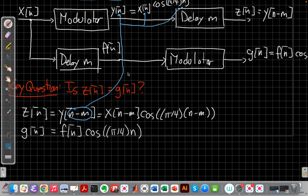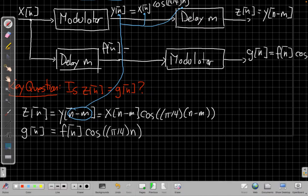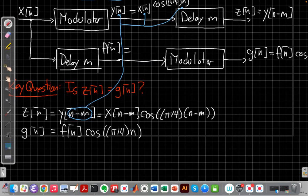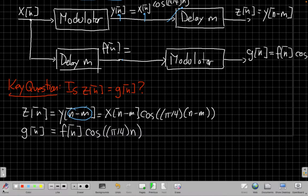So now we look and say well can we decide yet, is z the same as g? And we can't decide yet because we don't have this term back in terms of x's to compare it with. But with one more step we can do that. The next step is to recognize well if x[n] is the input to a delay system and f was the output.